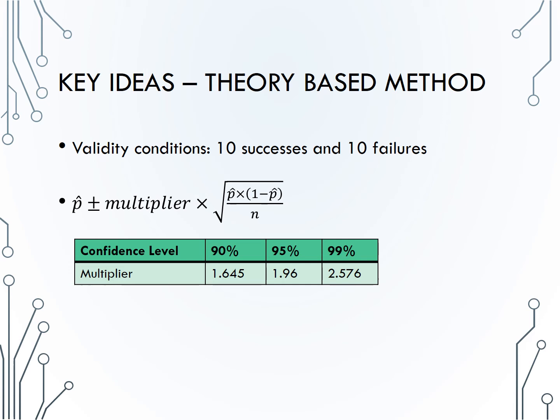Finally, the second half of this formula, the multiplier times the square root of p-hat times 1 minus p-hat over n, is what we call margin of error, and it determines the width of our interval. In fact, the width of a confidence interval is two margin of errors, because we have added our margin of error and subtracted it from our sample proportion.